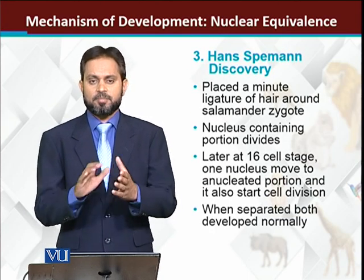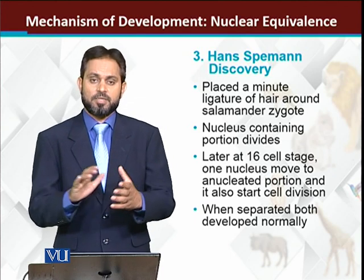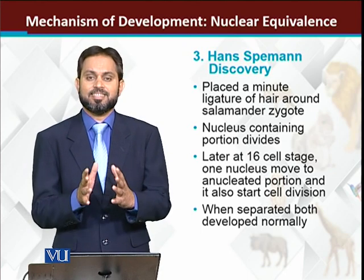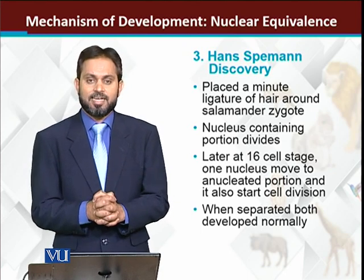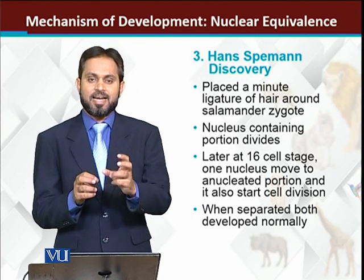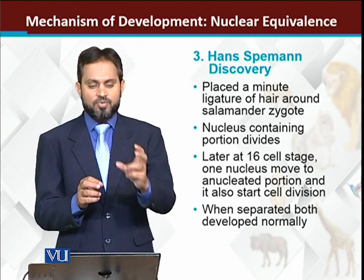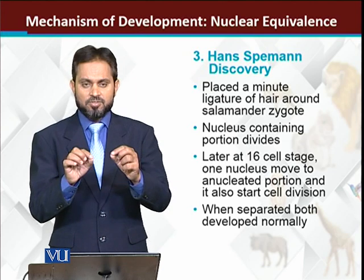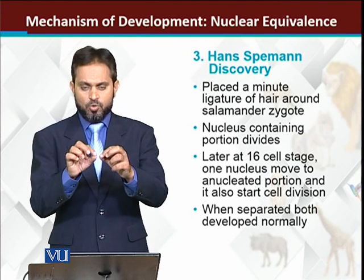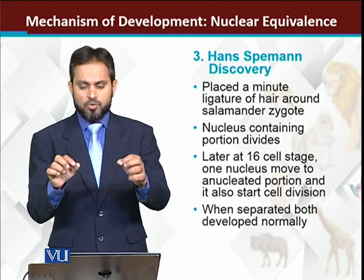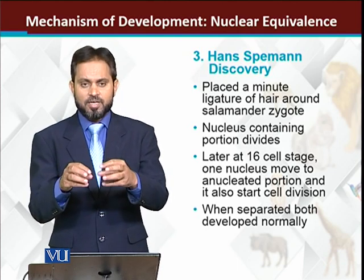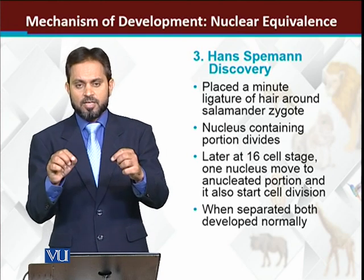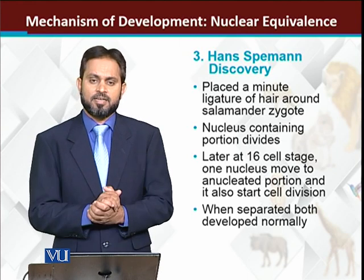Later on, Hans Spemann performed many experiments to understand developmental mechanisms. His most striking experiment was: he took a salamander fertilized egg — the fertilized egg is the zygote. He then applied a ligature and pinched it into two halves, dividing the zygote so that one half was on one side and the other half on the other side.